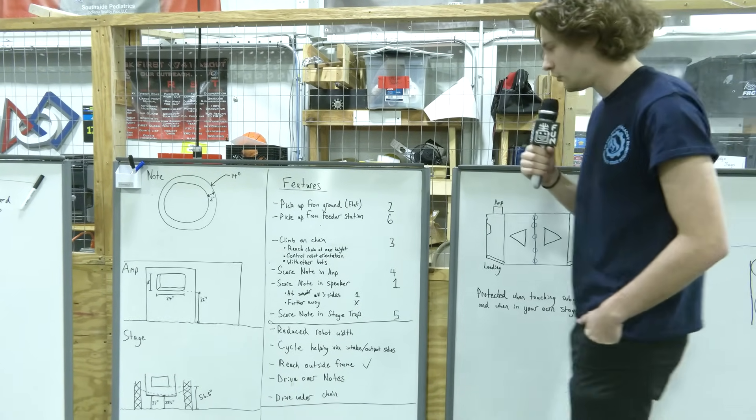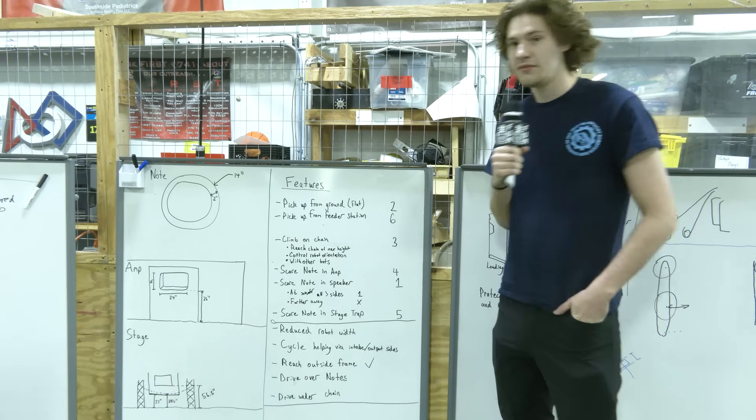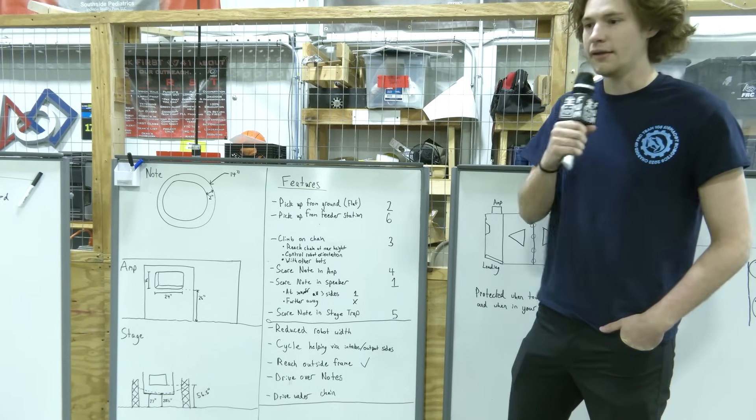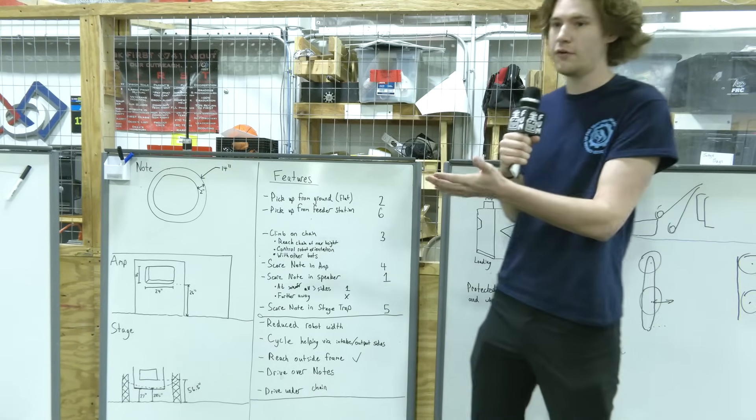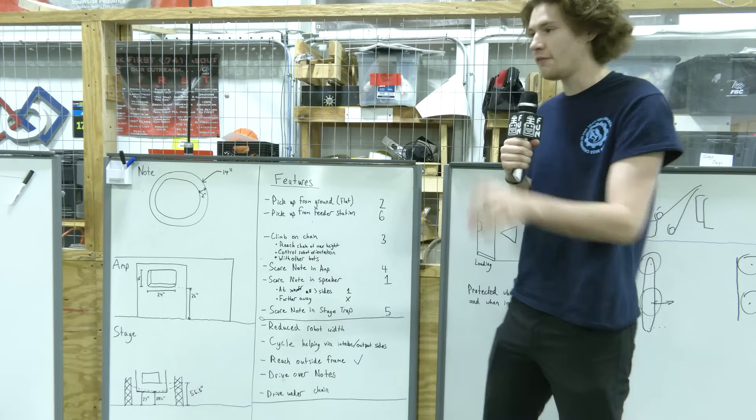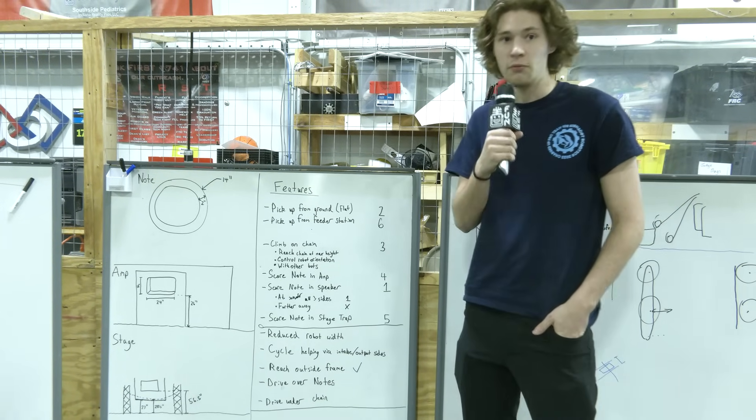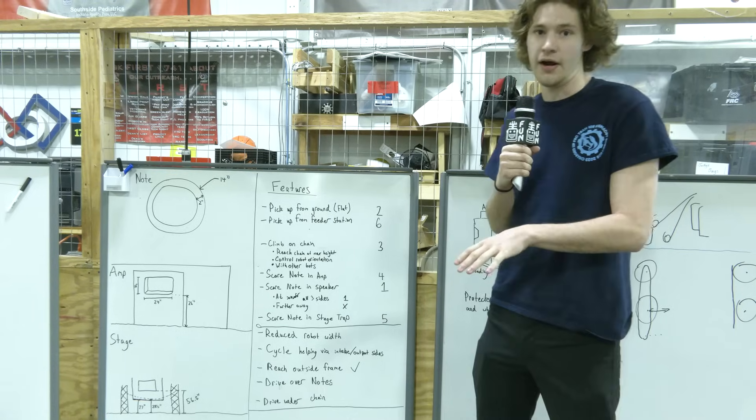Our second priority is going to be picking up from the ground. We say this because unlike last year where you had cones that could be in multiple different orientations, you could have to come point towards you, away from you, flipped over, there's many different orientations. This year, the game piece can only be in one orientation that's going to be flat on the ground.